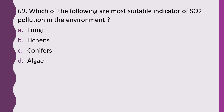Question 69. Which of the following are the most suitable indicators of SO2 pollution in the environment? Fungus, lichen, conifers, or algae. The correct answer is option B, lichens.